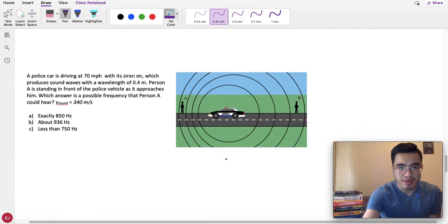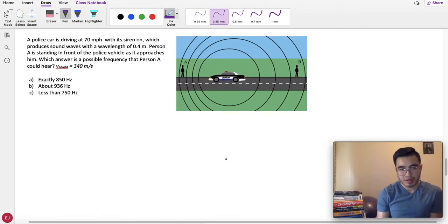Now, the exercises. Number one, it says, a police car is driving at 70 miles per hour with the siren on, which produces sound waves with a wavelength of 0.4 meters. Person A is standing in front of the police vehicle as it approaches him. Which answer is a possible frequency that person A could hear? The speed of sound is 340 meters per second in air.